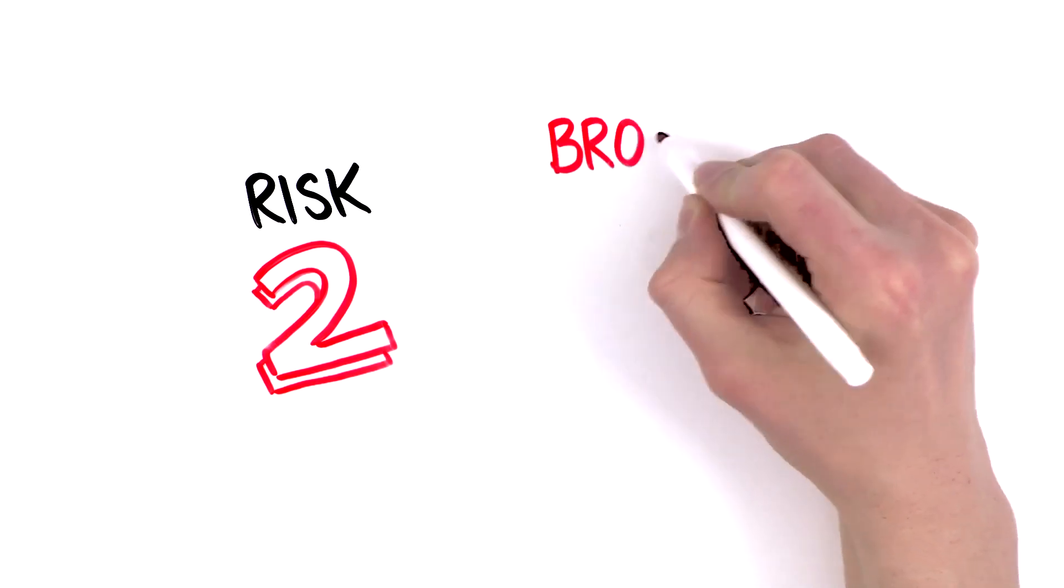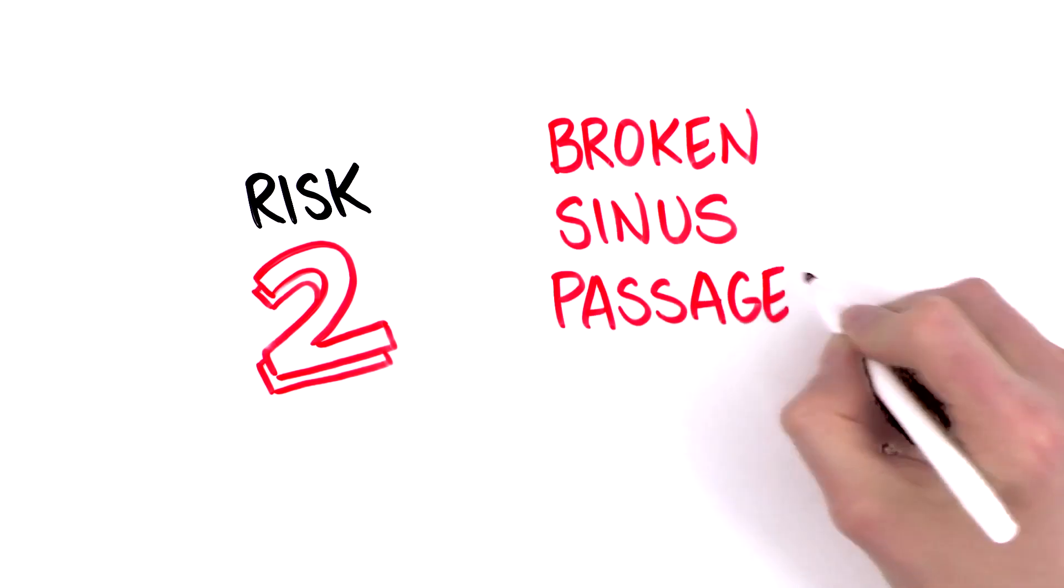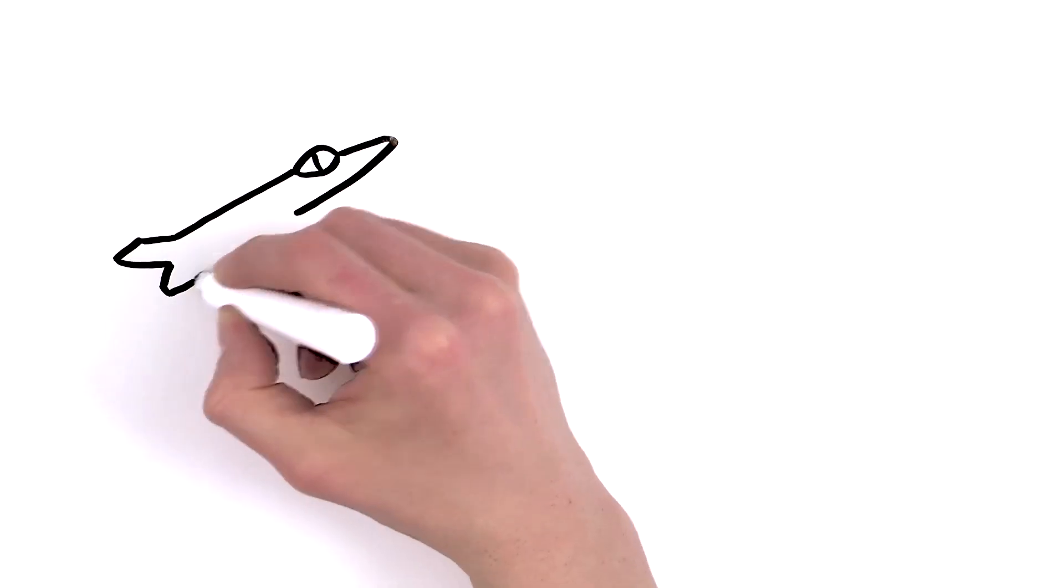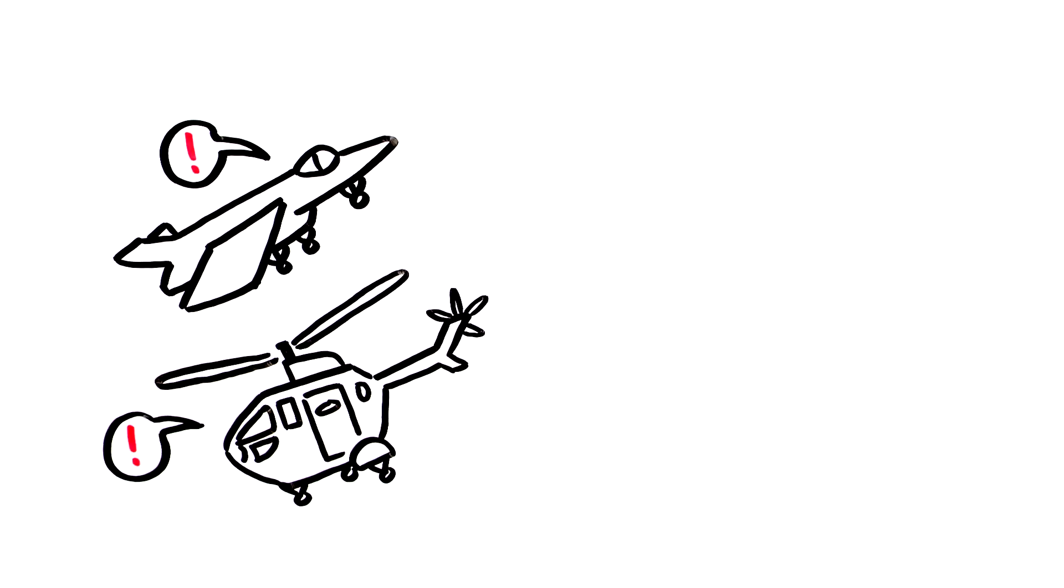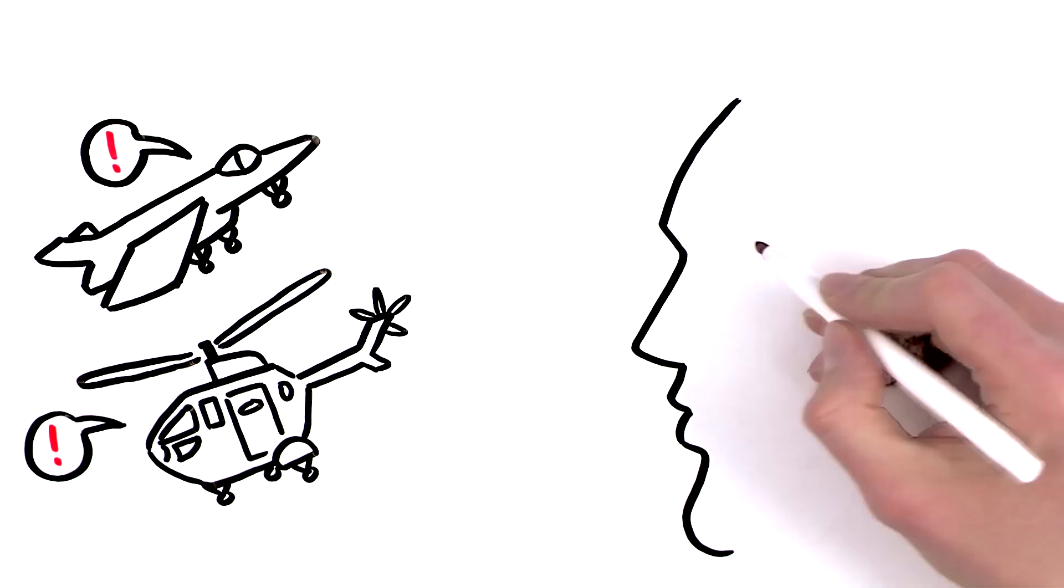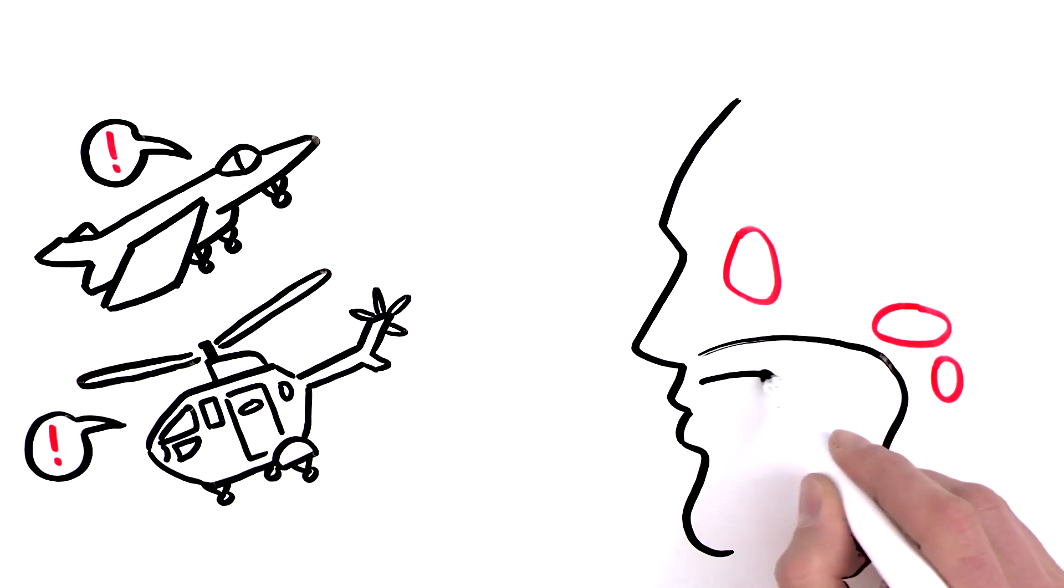Second, the periosteum in your sinuses might detach. Go flying with a head cold and you could find out the hard way. The sinuses, like your eardrums, are connected to the outside environment via narrow passages.